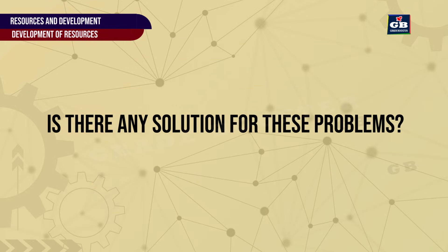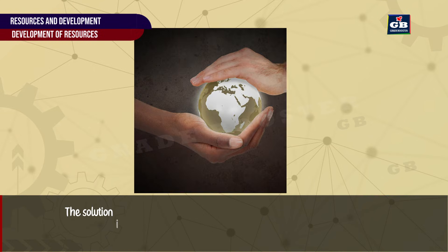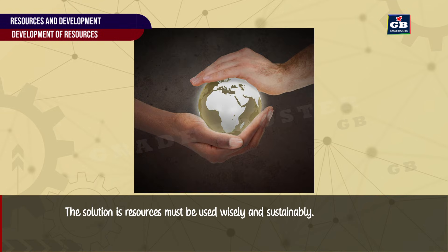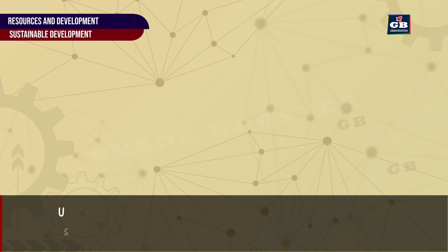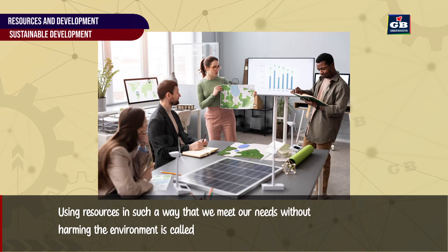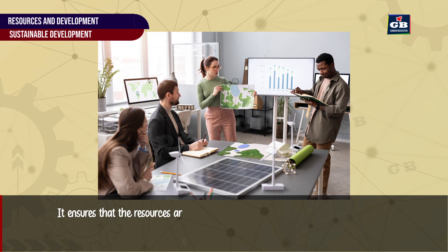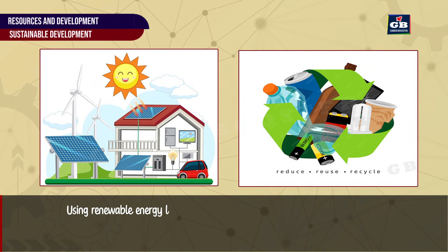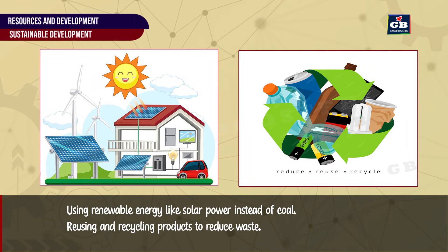Is there any solution for these problems? The solution is that resources must be used wisely and sustainably. Sustainable Development means using resources in such a way that we meet our needs without harming the environment. It ensures resources are available for future generations. For example, using renewable energy like solar power instead of coal, and reusing and recycling products to reduce waste.